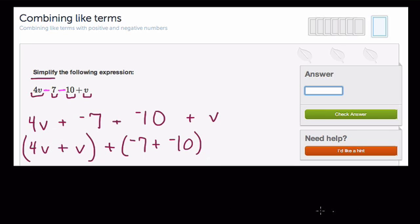Now I have my answer. This would be 5v, right, 4v and v. Then negative 7 plus negative 10 is negative 17. So 5v plus negative 17, and then I would just write this in terms of subtraction if I have a negative. So 5v minus 17 would be my answer.